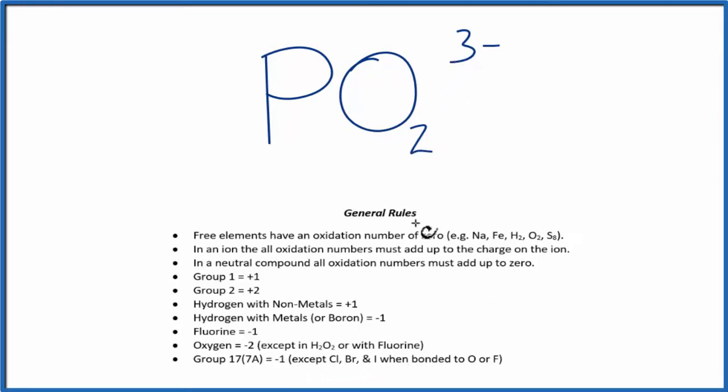We use these rules here to guide our work. As we look down the rules we don't see phosphorus, but we do see oxygen, and oxygen has an oxidation number of minus two with a few exceptions. So each of these two oxygens has an oxidation number of minus two.